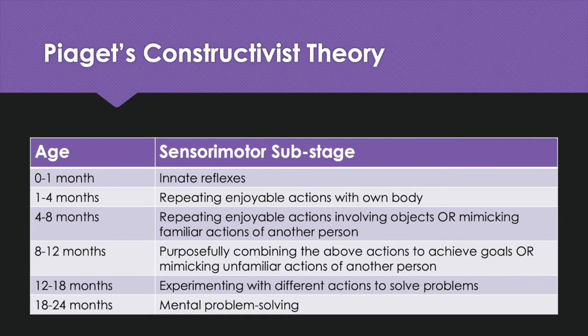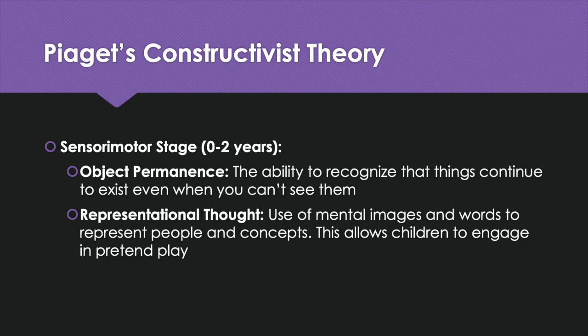To recap: first, innate reflexes; then repeating enjoyable actions with their own body; then repeating enjoyable actions involving objects or mimicking familiar actions; then mimicking unfamiliar actions or purposefully combining secondary circular reactions; then experimenting with different actions to solve problems; and finally, mental problem solving. Overall, the sensorimotor stage is characterized by the development of object permanence — the ability to recognize that things continue to exist even when you can't see them, which is why babies find peekaboo so fun. It also involves the development of representational thought, using mental images and words to represent people and concepts, which allows children to engage in make-believe play.